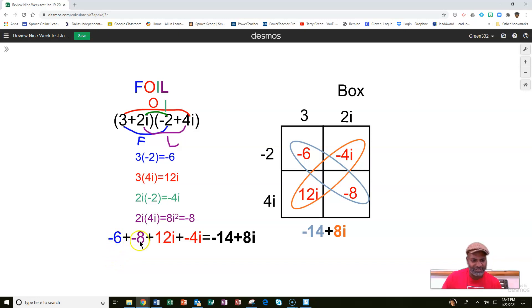And make sure you put the real parts together and the imaginary parts together. So negative 6 plus negative 8 is a negative 14. And you get 12i plus a negative 4i is 8i. So that gives you your final answer, negative 14 plus 8i. That's using the FOIL method.